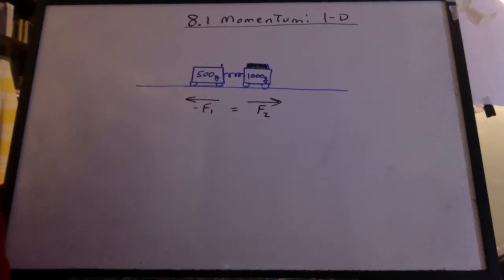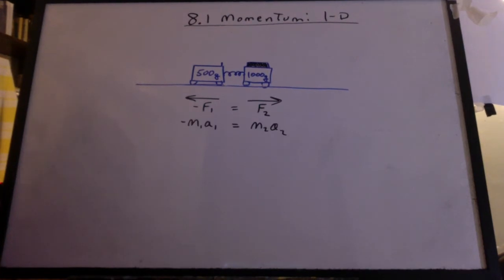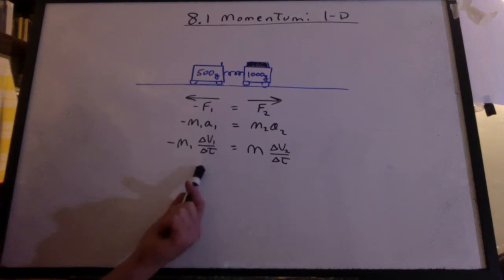The spring acts on both carts. Due to Newton's third law of motion, they must be equal and opposite. Using Newton's second law, we can make this substitution. Acceleration is the change in velocity over the change in time. And since each force must be equal and opposite, then one cannot exist without the other. So therefore these times must be the same.